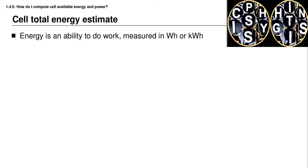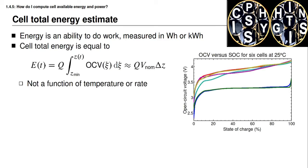Remember that energy is an ability to do work, which we can measure either in watt-hours or kilowatt-hours. We can compute the total energy in a cell in a fairly simple way. The energy is equal to the total charge capacity of the cell Q multiplied by the area under the open circuit voltage relationship between the present state of charge and the minimum state of charge permitted by the application. This integral might look difficult to compute, but in fact it's possible to pre-compute its values and store them in a table for easy lookup using a table lookup interpolation scheme as the battery management system operates, which you will learn how to do in a later lecture this week.